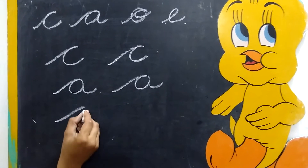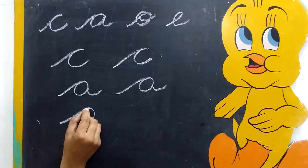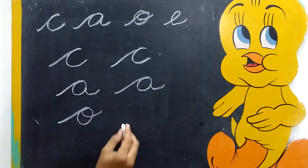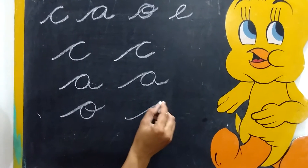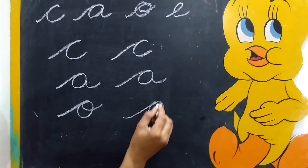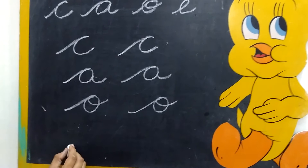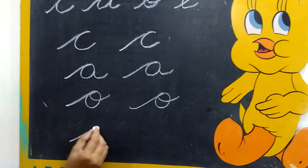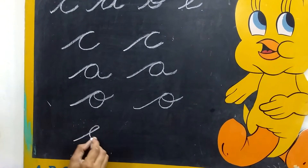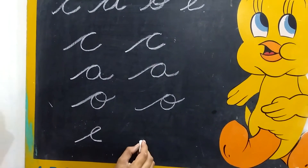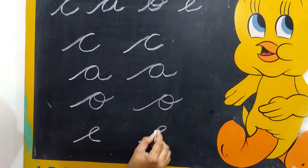Slanting line, circle, o. Slanting line, circle, o. Slanting line, curve. Slanting line, curve.